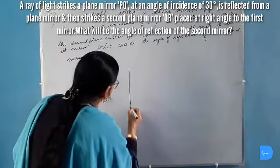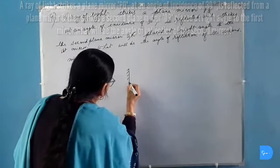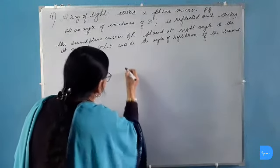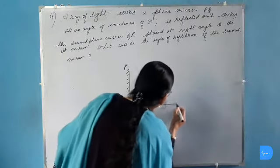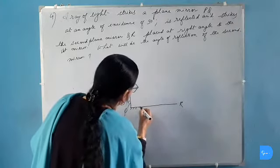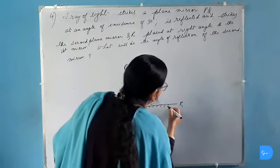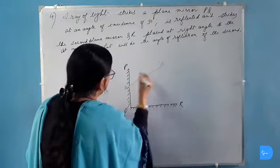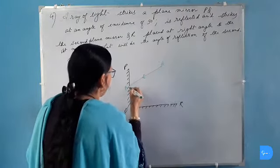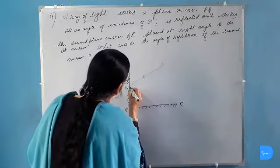The mirror PQ is placed at right angle to the mirror QR. These two mirrors are at right angle to each other. Now a ray of light say AB strikes the mirror PQ and makes an angle of incidence equal to 30 degrees.